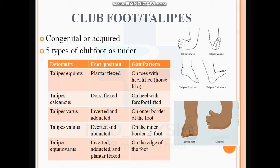Next is club foot. Club foot can be present congenitally or acquired. It typically presents in babies with these kinds of deformities. There are five types of club foot deformities: talipes equinus, talipes calcaneus, talipes varus, talipes valgus, and talipes equinovarus, which is the typical club foot.